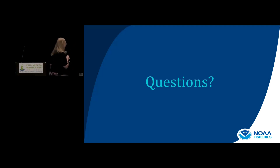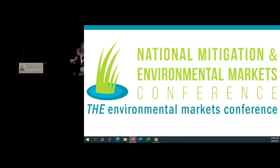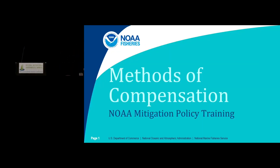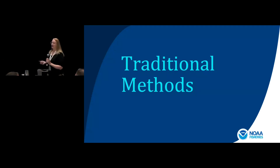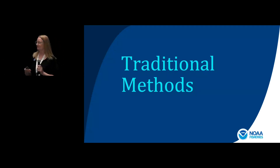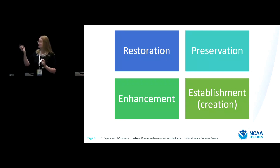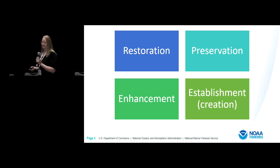I think we have lots of time left to hop into mitigation methods — methods of compensation — which is next. This is going to cover stuff in the procedure in one of the later sections. We have two sections in the procedure: one is methods of compensation — restoration, preservation, enhancement, creation — and the other section is mechanisms of compensation, which deals with permittee-responsible, bank, in-lieu fee, that kind of thing.